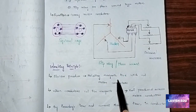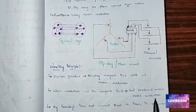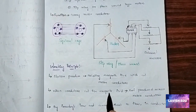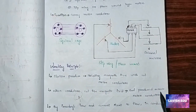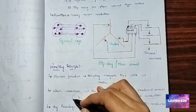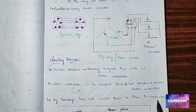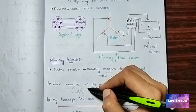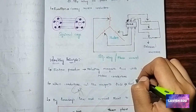The stator is on the outside of the machine and produces a rotating magnetic flux. When the conductors cut the magnetic field, an EMF is produced across the rotor conductors. As the conductors cut the rotating magnetic field, an EMF is generated in the rotor conductors.